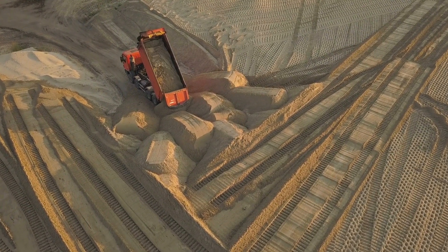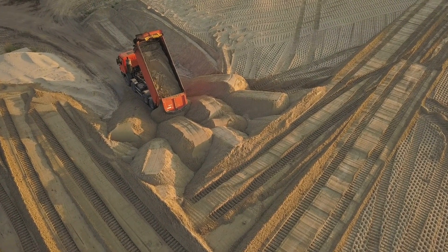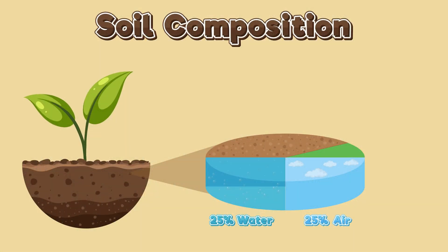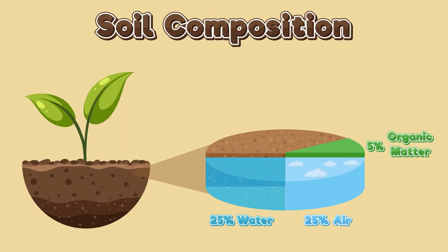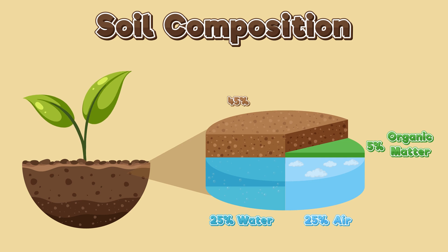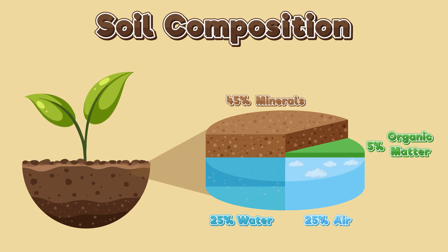As you can see, all four components — air, water, living organisms and rock particles — are vital to healthy soil. Now let's talk more about why air alone is so important to soil and our environment.